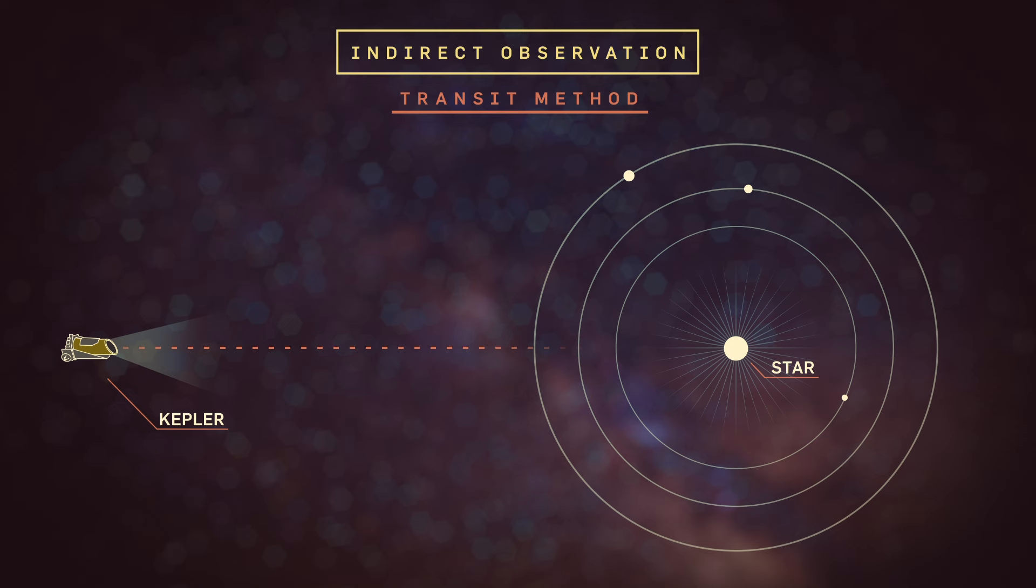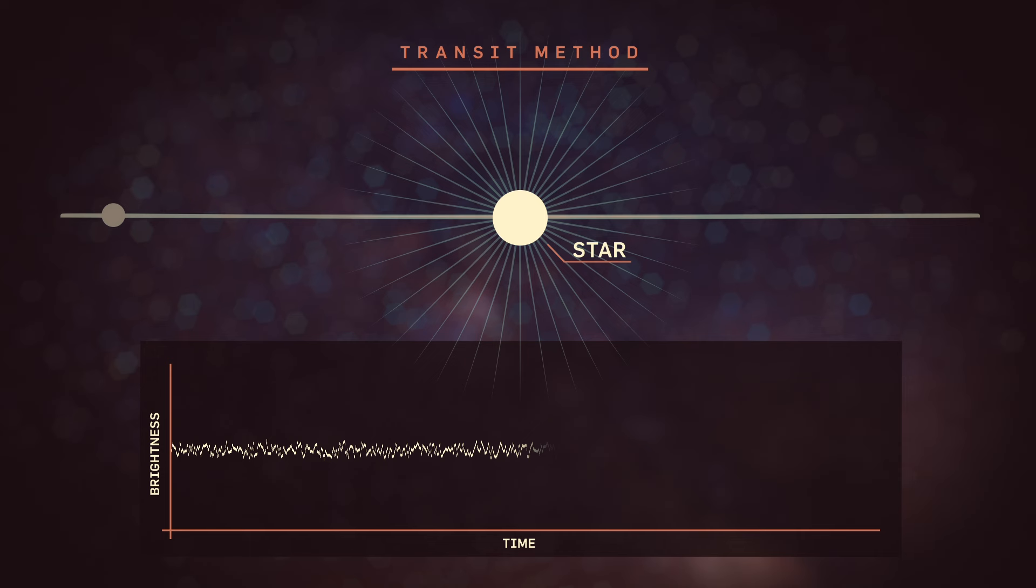So for example, in the transit method, what you do is you look at a very large number of stars, thousands, hundreds of thousands of stars, knowing that there's some small chance that some of them will have their orbits aligned in just the right way, that the planets will actually cross in front of their star from our line of sight.